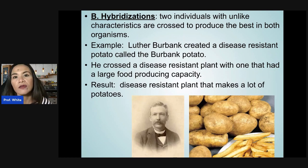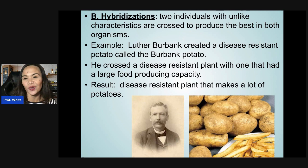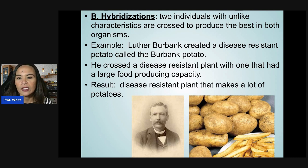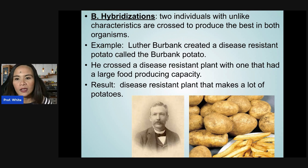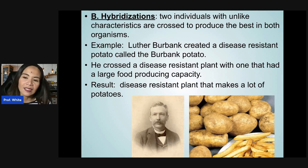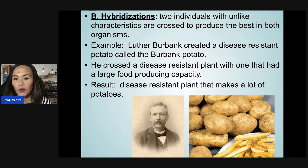Hybridization is when two individuals with unlike characteristics are crossed to produce the best of both organisms. For example, Luther Burbank created a disease-resistant potato called Burbank potatoes by crossing a disease-resistant plant with one that had a large food-producing capacity, resulting in a disease-resistant plant that makes a lot of potatoes.